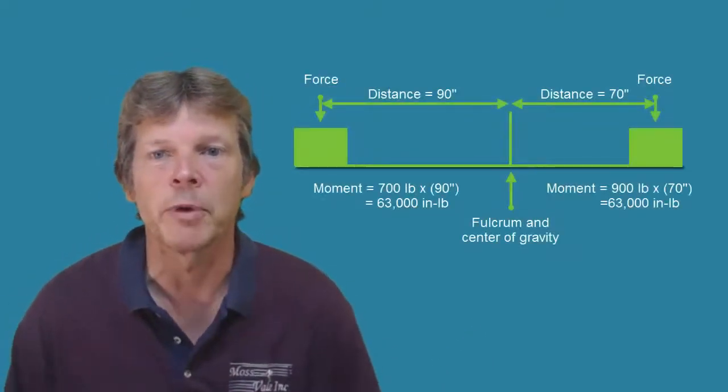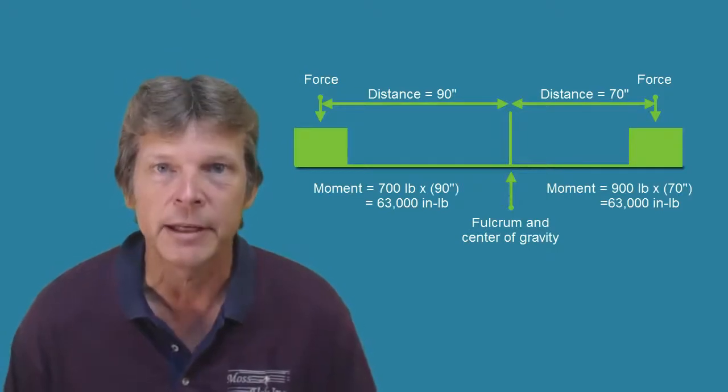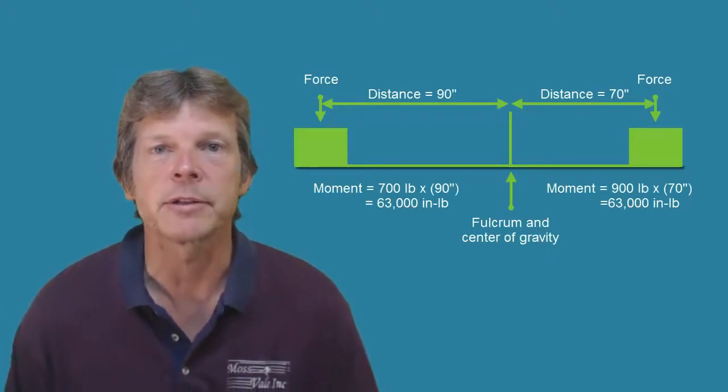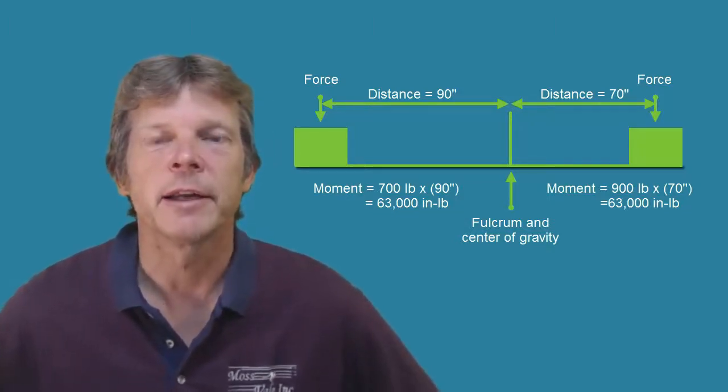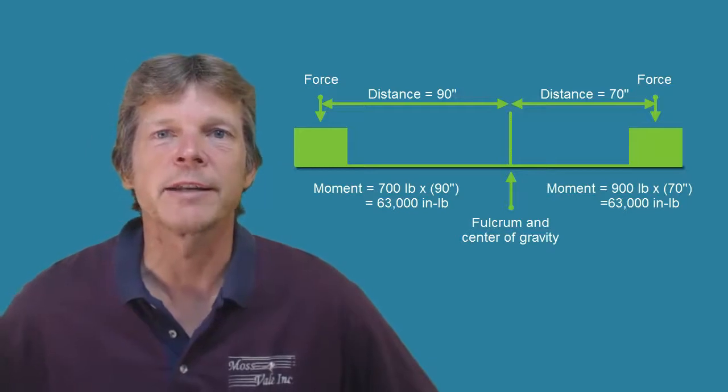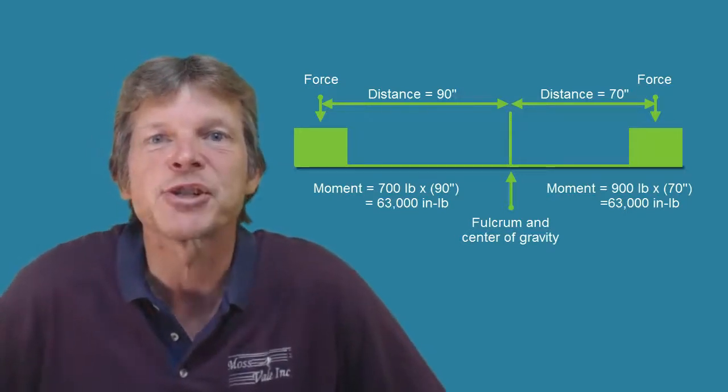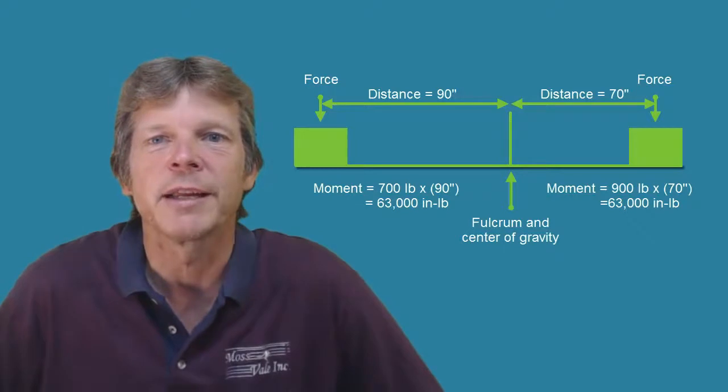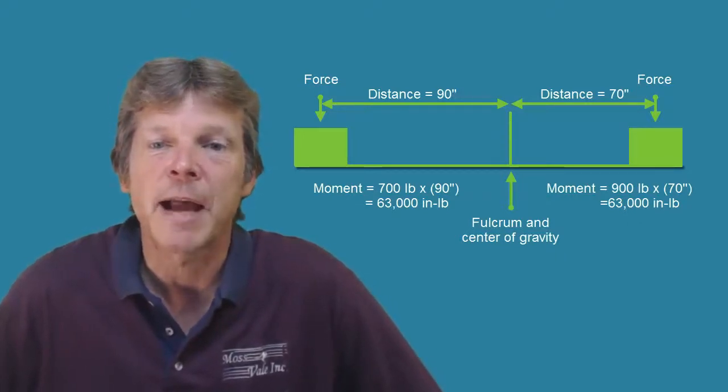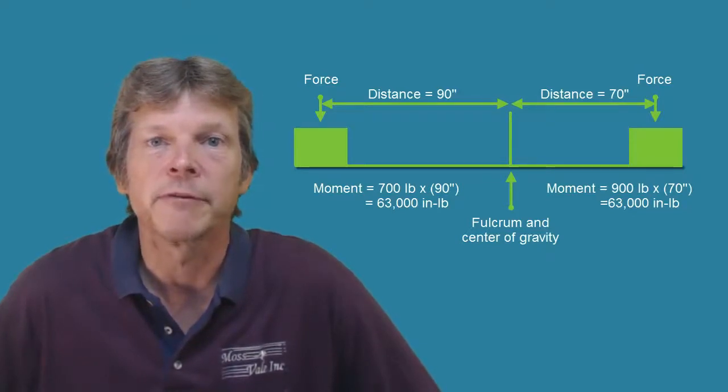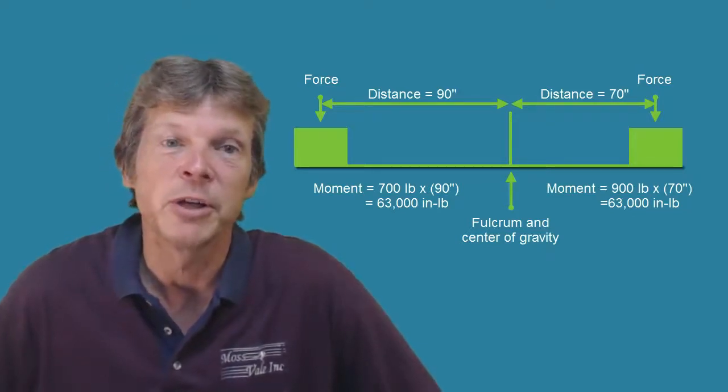So when we're doing center of gravity calculations and we're taking the weight times the arm equals the moment, we're going to mathematically find where this airplane balances. In real life, I can't take this big heavy airplane and have a piece of wood with a nail on it and suspend it from a nail. Or I can't tape a string to the top of the wing and try to find where this thing hangs level. But I can calculate it mathematically. And we're going to use it by finding the moment. We're going to use it by finding weight times arm equals moment.